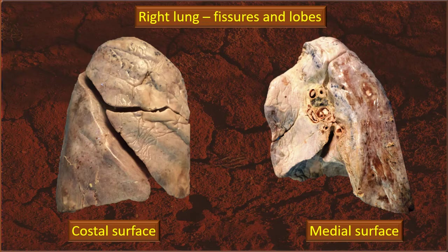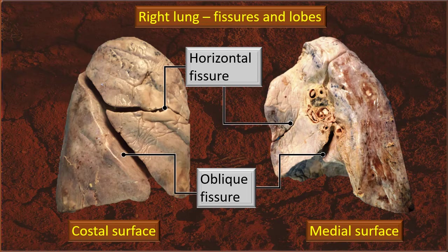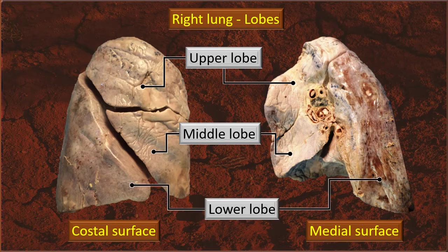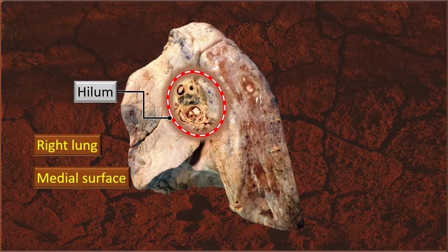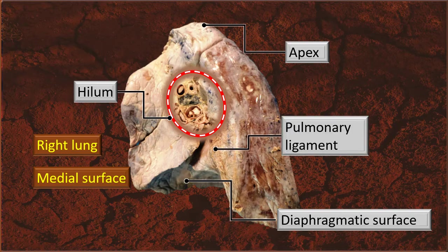For this right lung, just to recap quickly: fissures and lobes — horizontal fissure, oblique fissure. The costal and medial surfaces are shown in this photograph. Similarly, the upper lobe, middle lobe, and lower lobe. This area is a signature region on the medial surface — the hilum — that has been marked. Also note the apex at the top, the diaphragmatic surface or base at the bottom, and the pulmonary ligament.